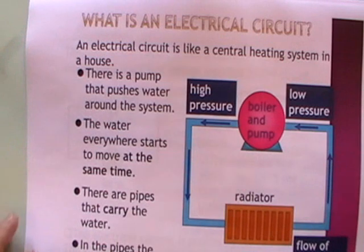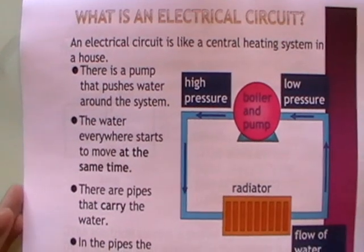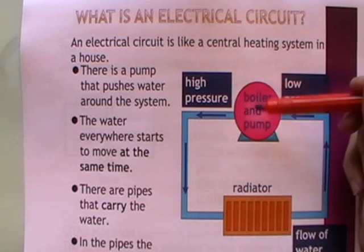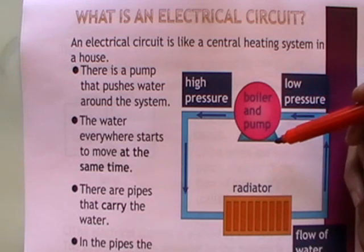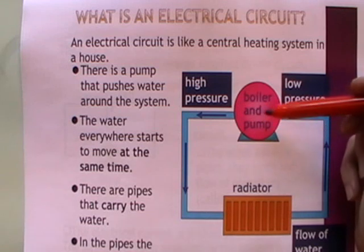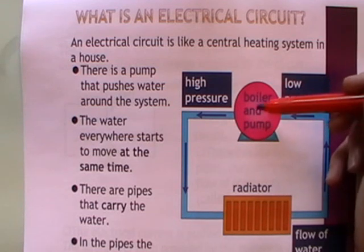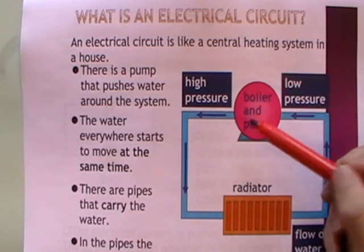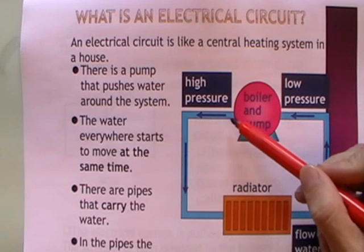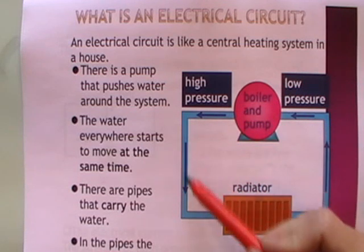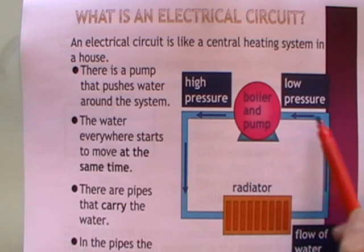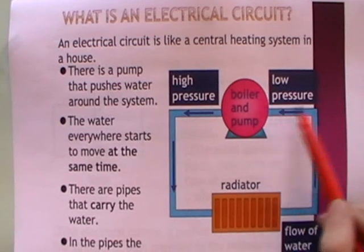We're going to start off by talking about what an electrical circuit actually is. An electrical circuit is like the central heating system in your house. In your house, outside in the garage or outside the house, you have a boiler and a pump. That pump pumps hot water coming from the boiler — the boiler burns some oil, boils some water, and pumps the hot water around the house. At the start where it's pumping the hot water there's high pressure, and it pumps it right through the house, through all the radiators and back to the boiler again to get heated up. There's low pressure at the return side.